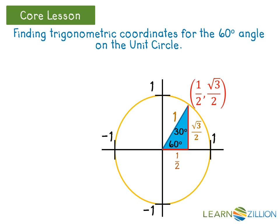Since the 60-degree angle is at the origin, it is the reference angle. For this reason, the cosine of 60 degrees equals one-half, and the sine of 60 degrees equals the square root of three over two.